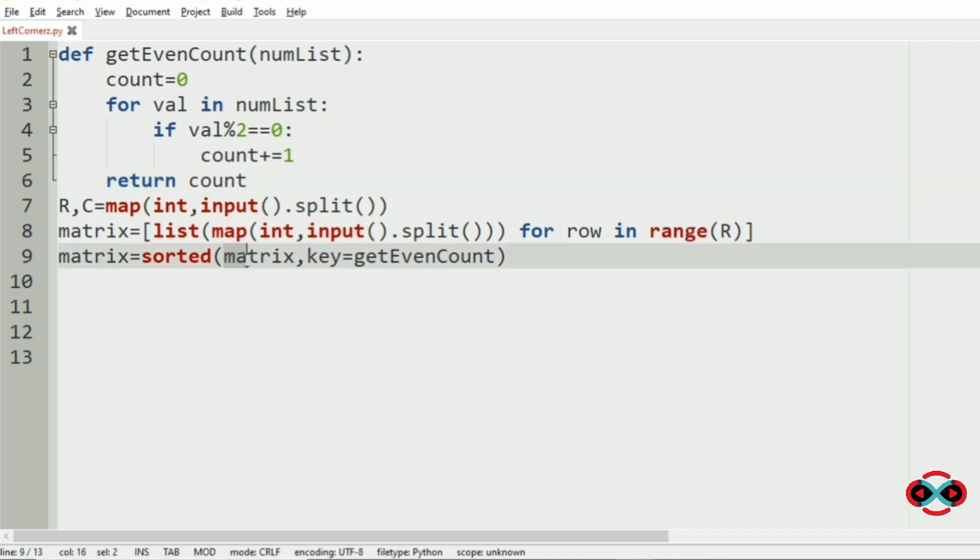So now the matrix is being sorted. We are going to use the loop for row in matrix. We are going to print asterisk row. So this asterisk will unpack the elements in the list.